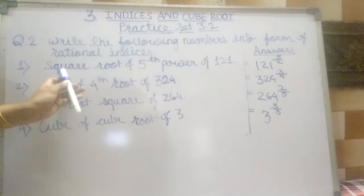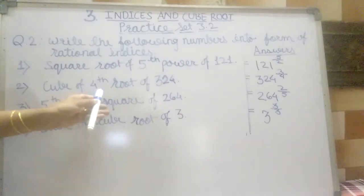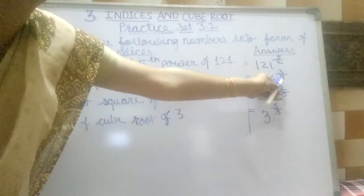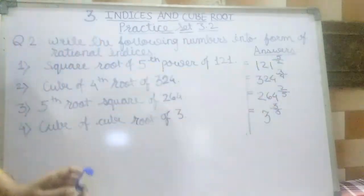We shall read it as square root of 5th power of 121. Cube of 4th root of 324: 324 is the base and 3 by 4 is the index.